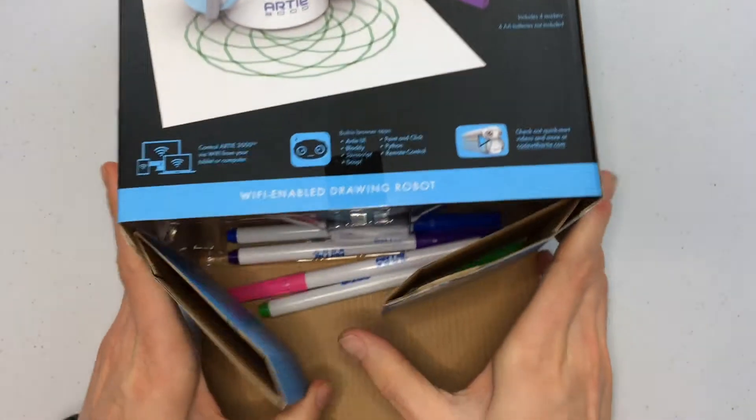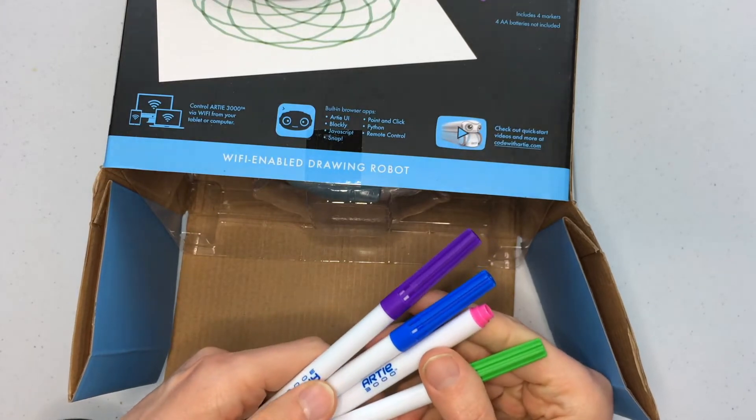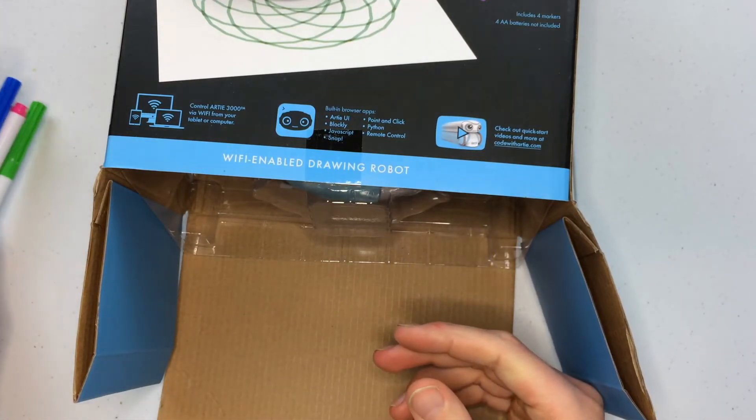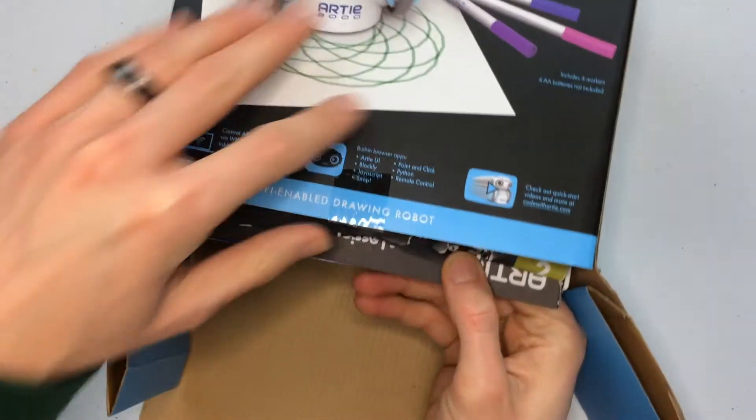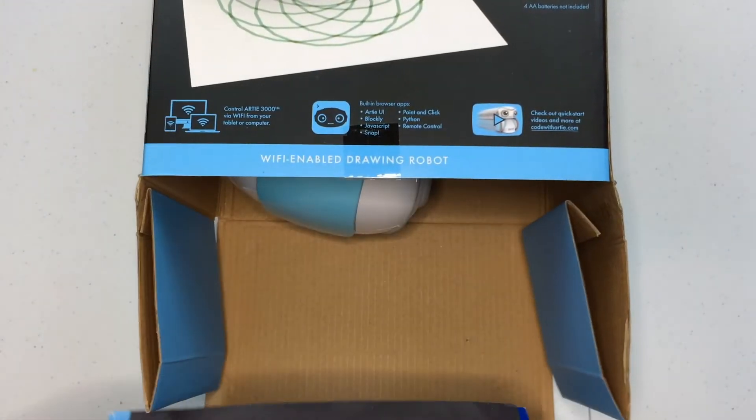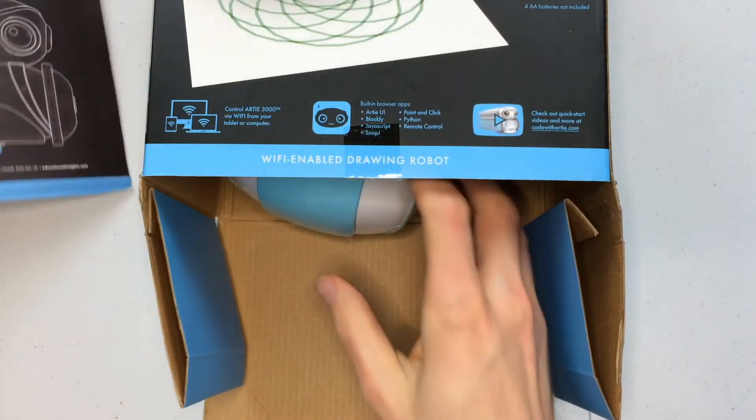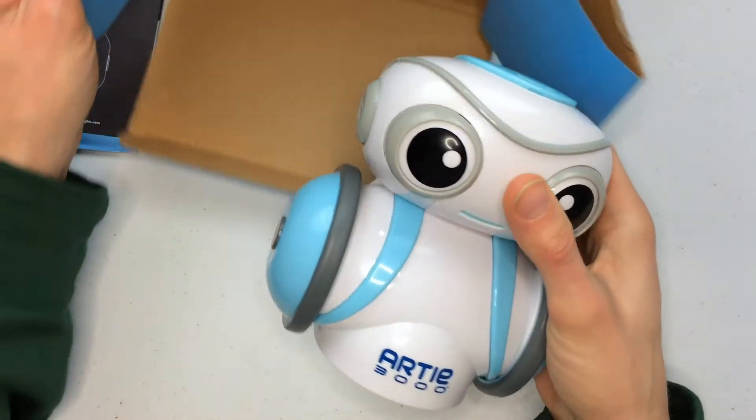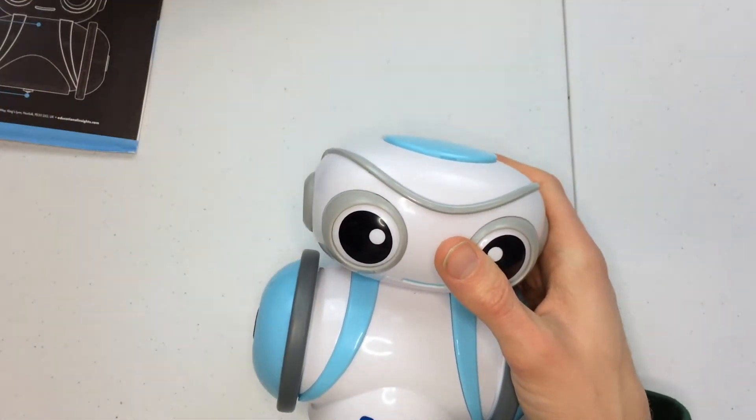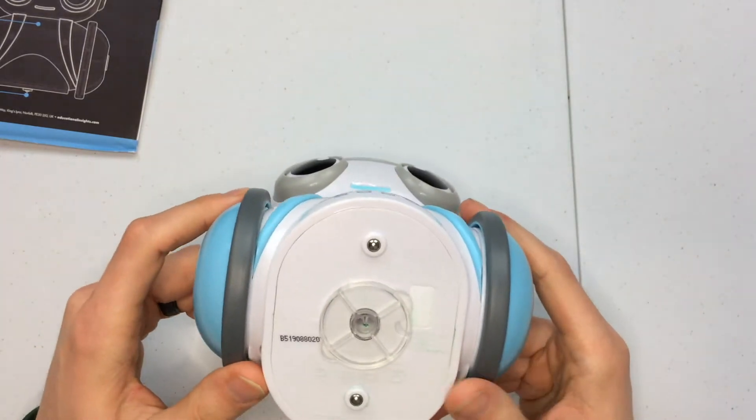Alright, so let's go ahead and open this up. It's a drawing robot that comes with these four markers. It looks like we got some manuals here and then we got the drawing robot. Set that box aside, we might need that for instructions later on.